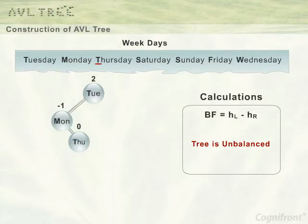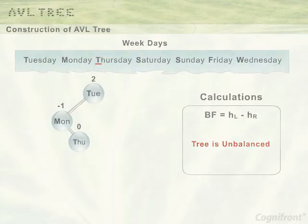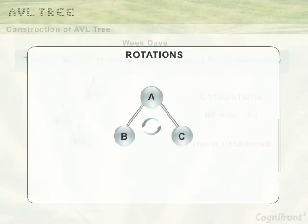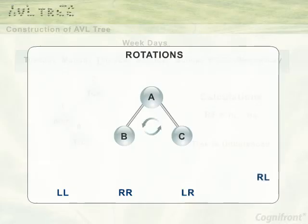Now the tree has become unbalanced. In order to rebalance the tree, a rotation is performed. Rebalancing is carried out using 4 different kinds of rotations: LL, RR, LR, and RL.